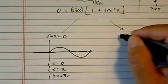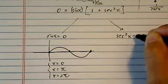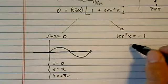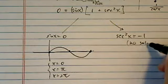Now secant, obviously secant squared x can't be equal to minus one, so basically there's no solution for this side.